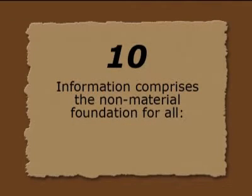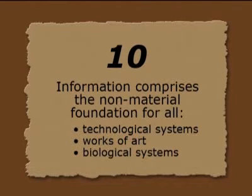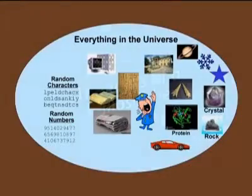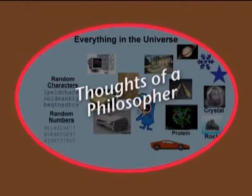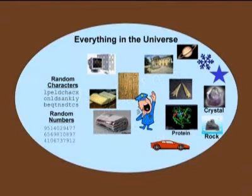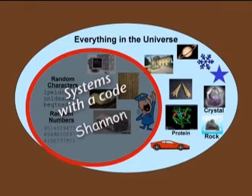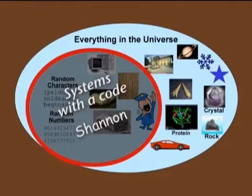Now let's have a look at information once again, because there are so many other definitions. Here you see a sort of philosopher who said everything in the universe is information — that's his definition. Or let me come to another definition: systems with a code. That's the definition of Shannon. Shannon is not interested in the meaning of the code; his question is only whether there are letters or numbers. There can be random numbers or whatever — everything like this is information in his definition.